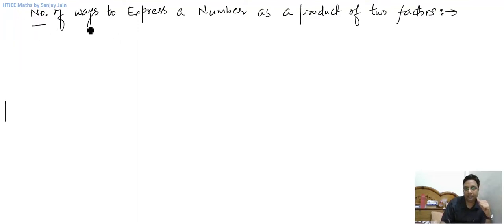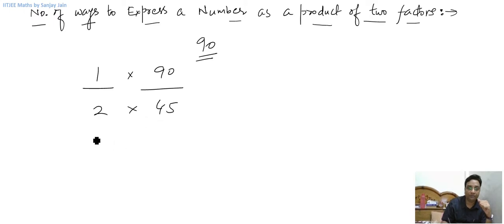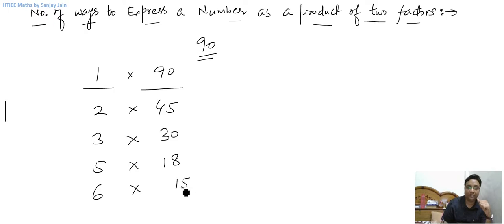In this lecture we will look at the number of ways to express a number as a product of two factors. For example, let's take the number 90. 90 can be expressed as a product of two factors like 1 into 90, 2 into 45, 3 into 30, 5 into 18, 6 into 15, and 9 into 10.